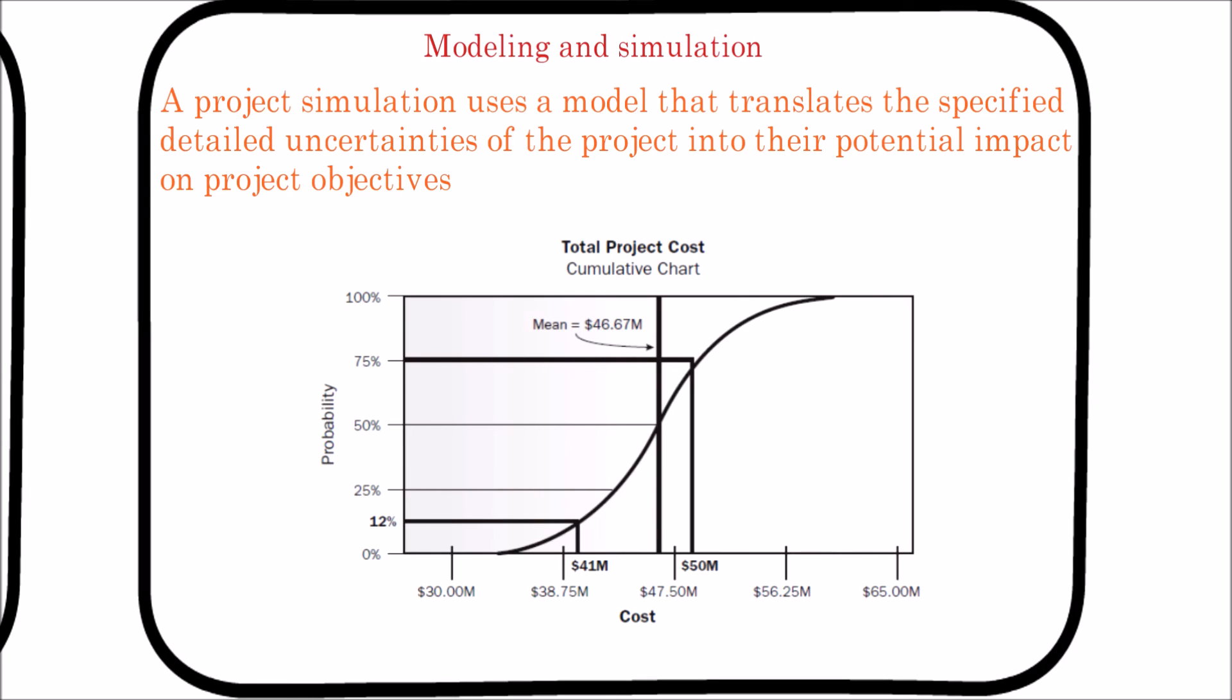From the example, we can say the project is only 12% likely to meet the 41 million USD most likely cost estimate. If the organization wants a 75% likelihood of success, a budget of 50 million USD is required.